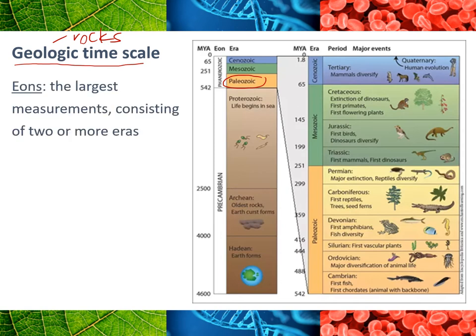I'll just quickly go through it because there have been questions in the past where it will give you this information and you need to understand it. So basically if you look down the left here, we've got a time scale. MYA means millions of years ago. So if we go all the way down here, this is saying that 4,600 million years ago — or 4.6 billion years ago — was when the Earth formed. So that's the oldest history obviously of the planet.